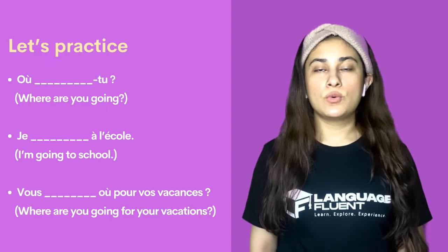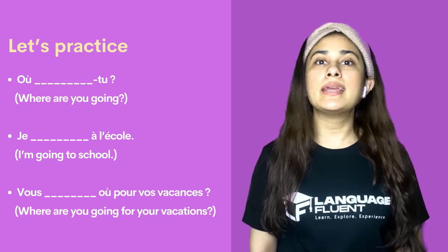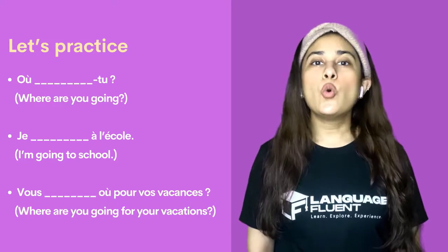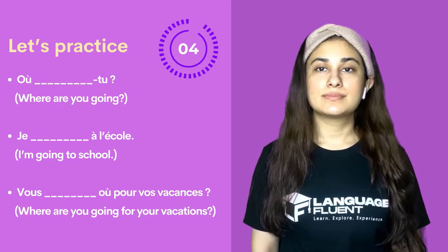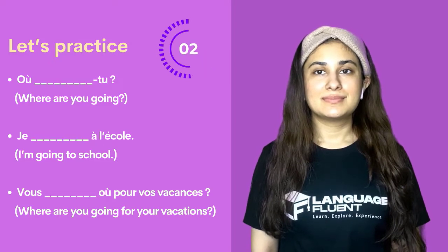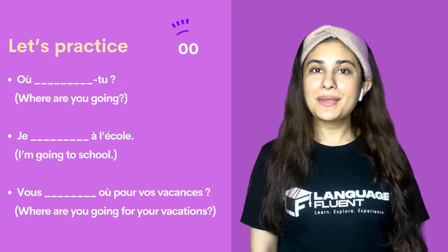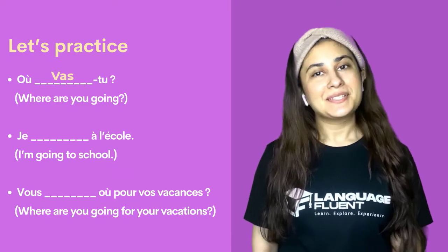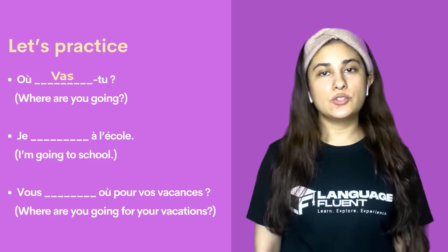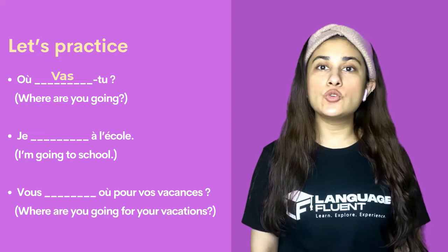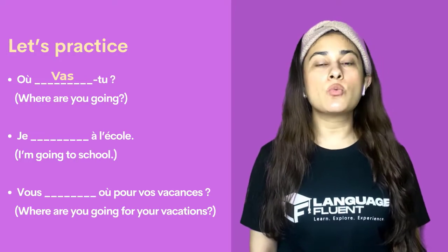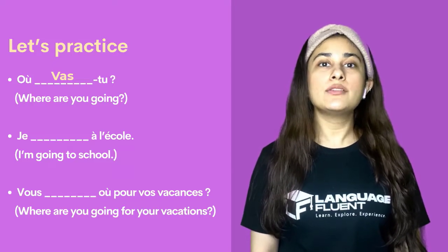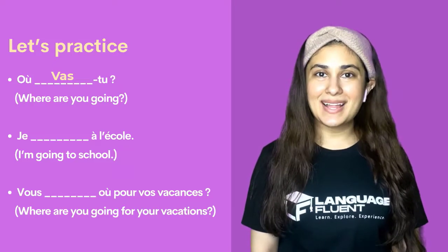Here comes the first one: Où tu ___? Since we have the subject tu, we know the conjugation is vas. So we have: Où vas-tu? Now since it's a question, we will raise our pitch at the end. Où vas-tu?